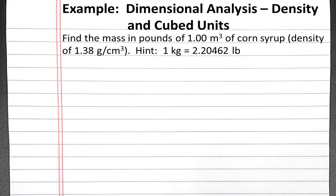First, we can create a map of how we'll solve the problem. We can begin with meters cubed and convert to centimeters cubed using the conversion factor 1 meter equals 100 centimeters. Then we can convert from centimeters cubed to grams using the density. We can convert from grams to kilograms using the conversion factor 1 kilogram equals 1,000 grams. And then we can convert from kilograms to pounds using the conversion factor given in the hint.